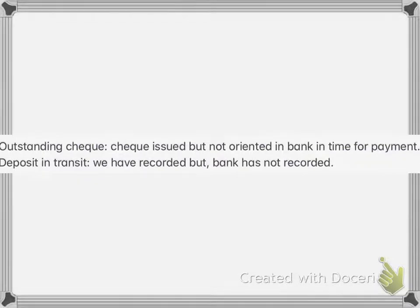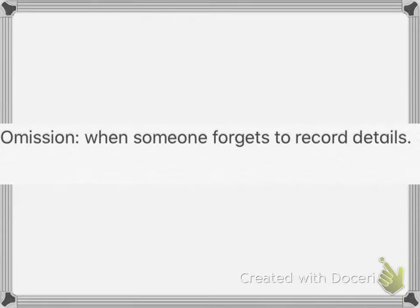Now let's look at two definitions: outstanding check and deposit in transit. An outstanding check is one that has been issued but not yet presented to the bank in time for payment. An omission is when someone forgets to record details.